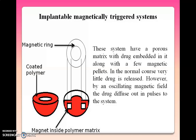Next is the implantable magnetically triggered system. This system has a porous matrix with drug embedded or entrapped in it along with a few magnetic pellets. In the normal course, very little drug is released; however, by an oscillating magnetic field, the drug diffuses out in impulses, and we can get drug action for a longer period.